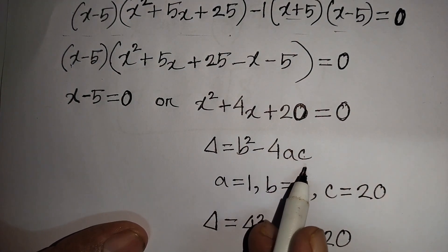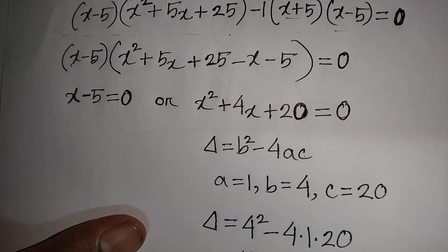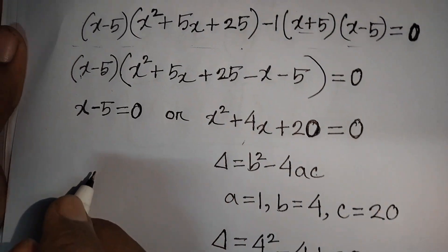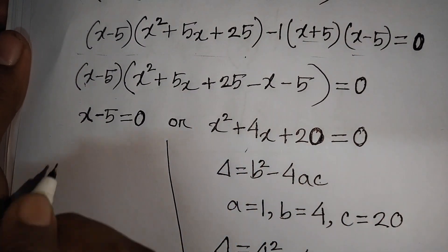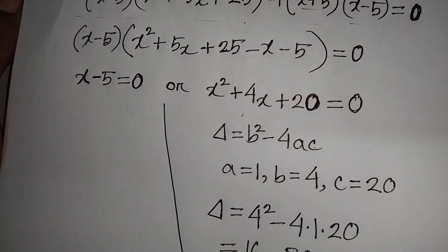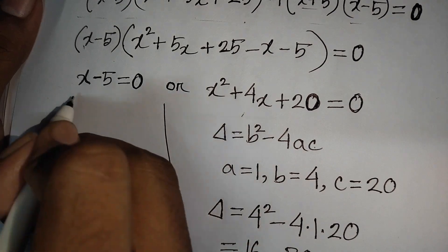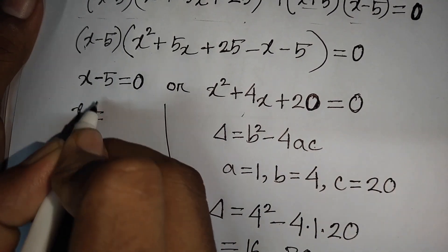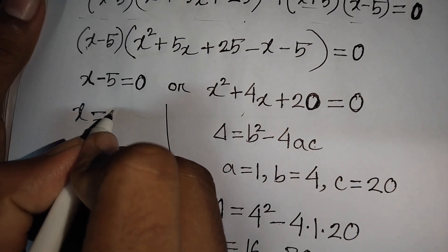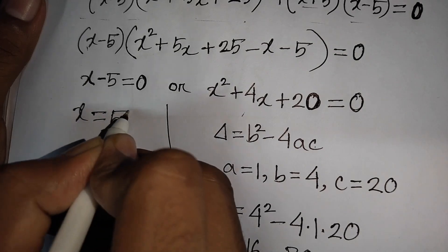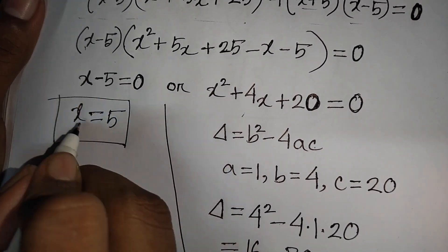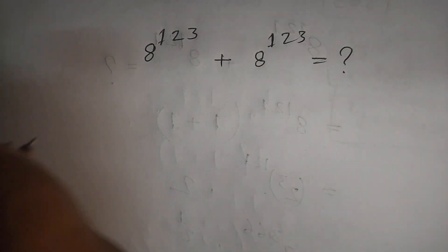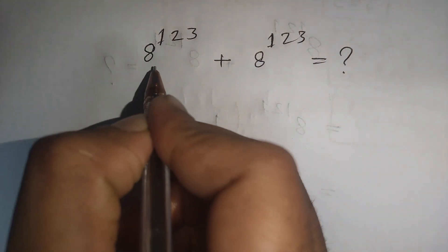Since b² - 4ac < 0, there is no real solution from the quadratic. So our final answer is x = 5, taking minus 5 to the right side gives plus 5. x = 5 is the value of x and our final answer.